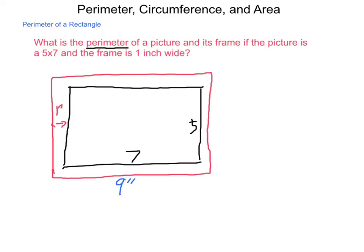Then we do the same thing. We take our 1 inch frame and put it on the 5 inch picture, both top and bottom, and we end up with a 7 inch height.